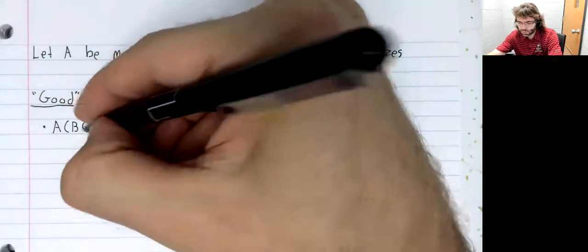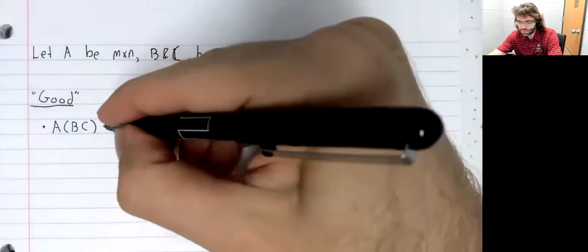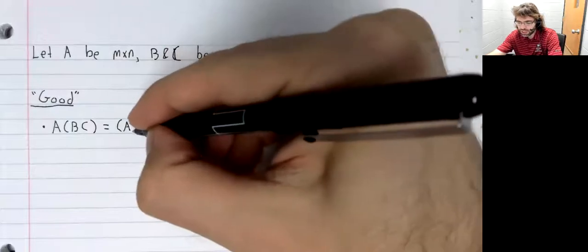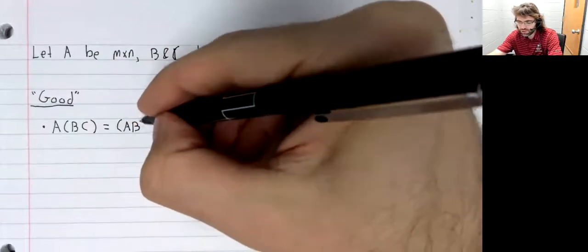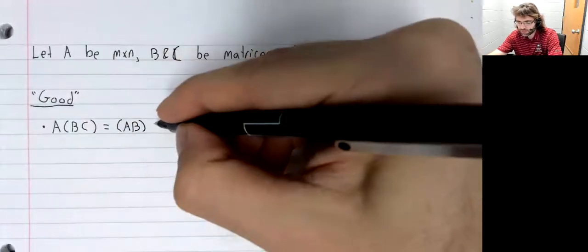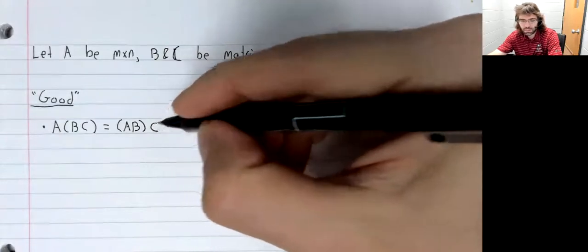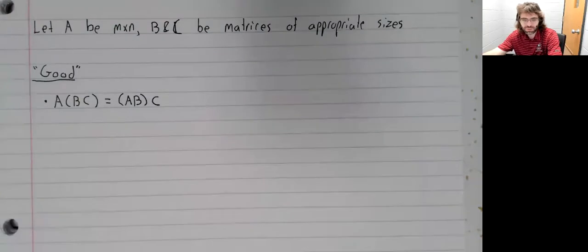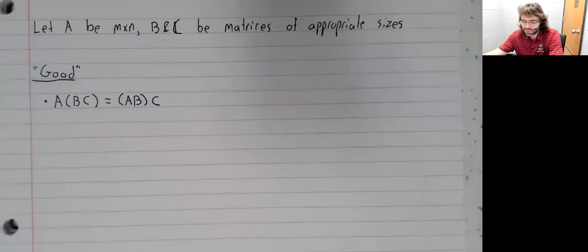Matrix multiplication had better be associative. We explicitly defined matrix multiplication to make it be associative, and it is. We have this property.